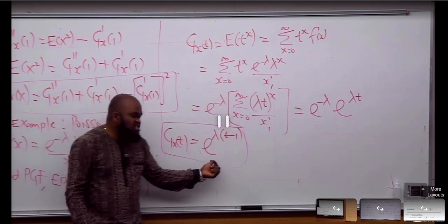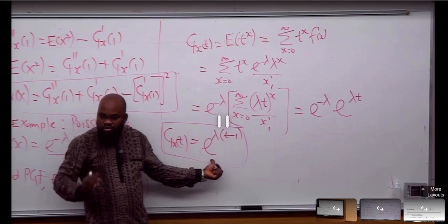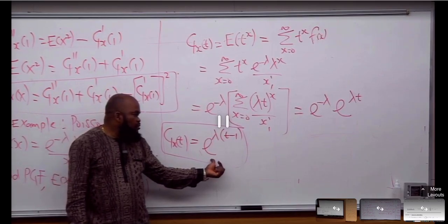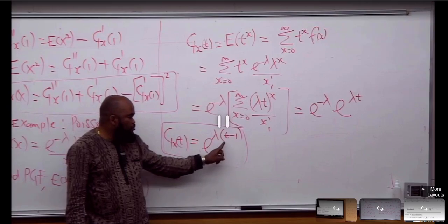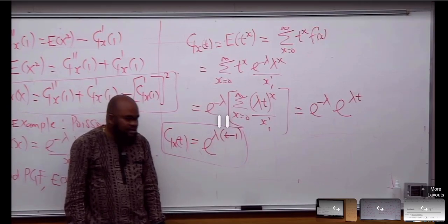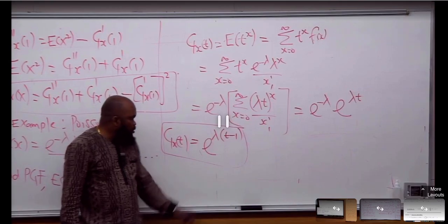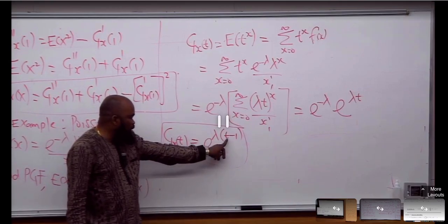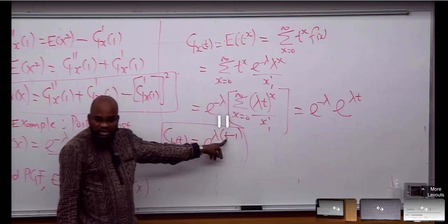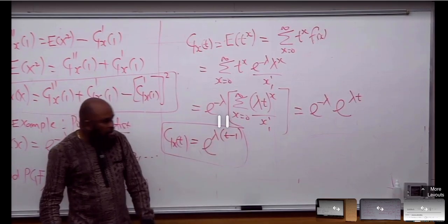If I really want to know whether I'm right, I'll plug in t = 1 wherever I see t. When I plug in 1, I should get 1. Plugging t = 1 into e^(λ(t-1)) gives e^(λ(1-1)) = e^0 = 1. Good — the PGF is verified.